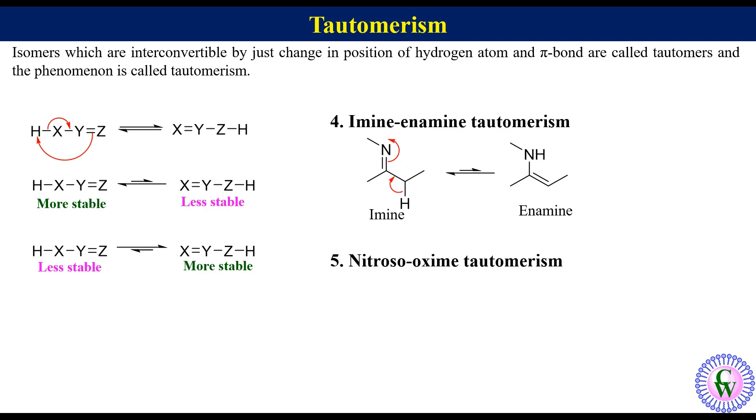Nitroso-oxime tautomerism. A nitroso compound with at least one alpha hydrogen can undergo delocalization of alpha proton to oxygen to produce oxime. Here, oxime is more stable than nitroso.